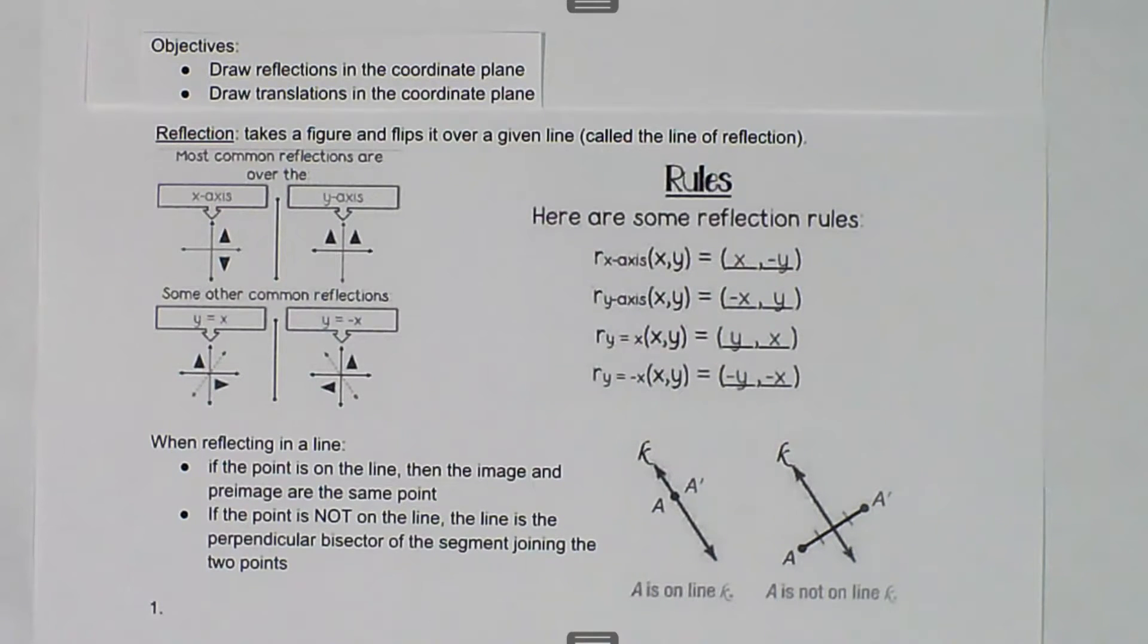We are talking about reflections and translations, and in this case we want to be able to draw reflections in the coordinate plane. A reflection takes a figure and flips it over a given line called the line of reflection.